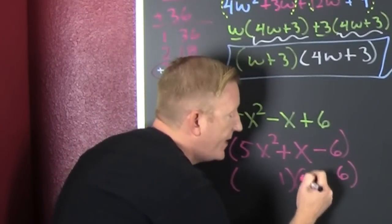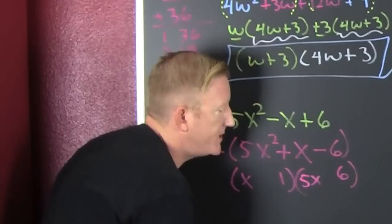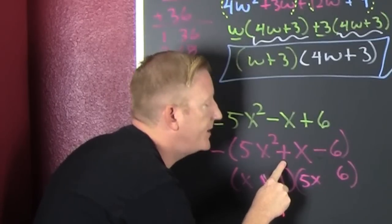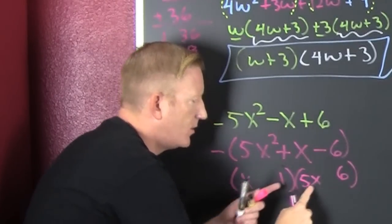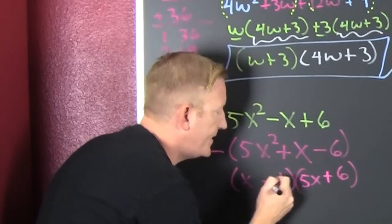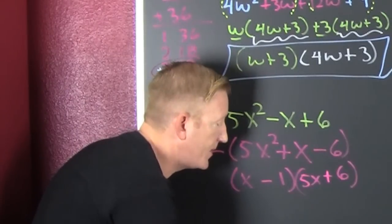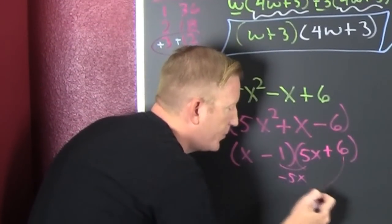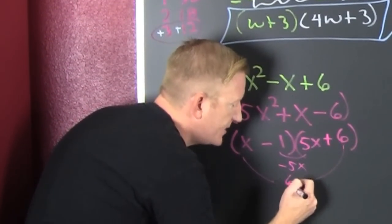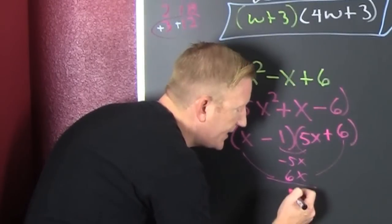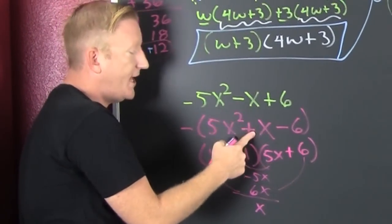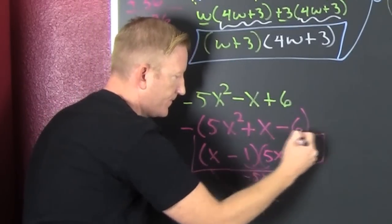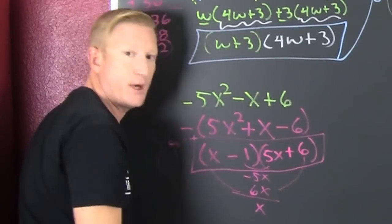So that 5X goes there and the 1X goes there. The signs are different and the big product is positive — 6 is bigger, so that's minus. It's called the guess and check method, so let's check it. The inner product is minus 5X. The outer product is positive 6X. When I add them, I get X, which is what we had.